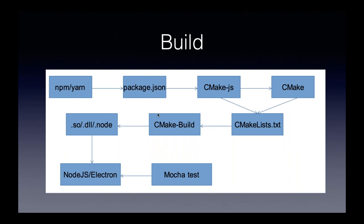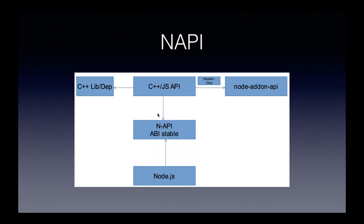In the package.json you define the parent project, including JavaScript front-end dependencies like React, and also your native Node module as a dependency. The native Node module uses cmake-js, which is a thin wrapper around CMake that handles the bridge from the npm regime to CMake, making sure the Node.js headers are available and that the build is triggered with npm build. You write your CMakeLists.txt as you normally would, the CMake build is triggered, and a shared library is built as the final target for the native module.